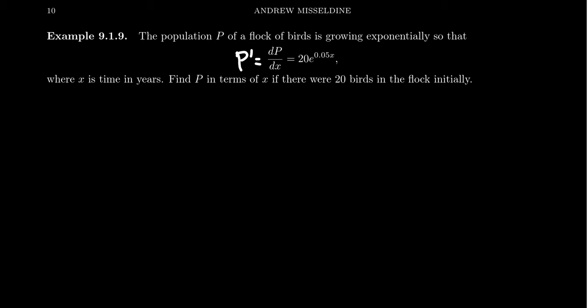What does that tell us for the function? It turns out it's not going to be much more complicated. We want to find P in terms of x if we know there are 20 birds at the beginning of our observations. So we have an initial value problem, a differential equation.